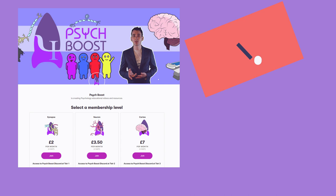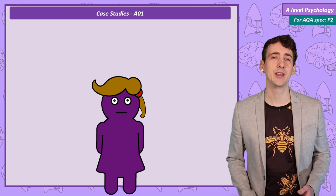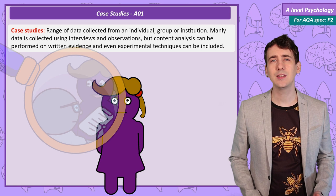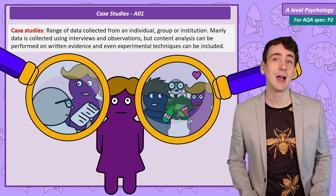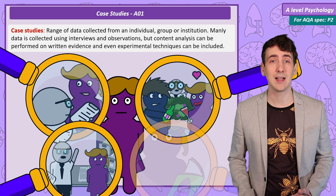In a case study a researcher gathers a range of information on an individual, a group or an organisation. Interviews are often the main source of data collected, but the researcher can include observations of behaviour and even experimental findings from psychological tests, and even content analysis on records like diaries.